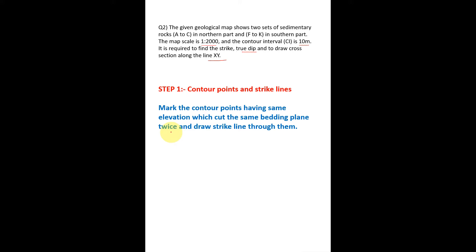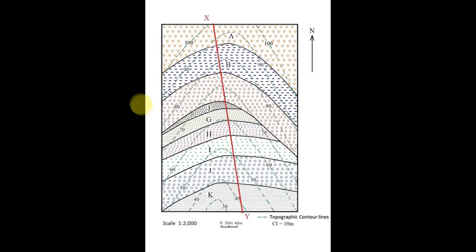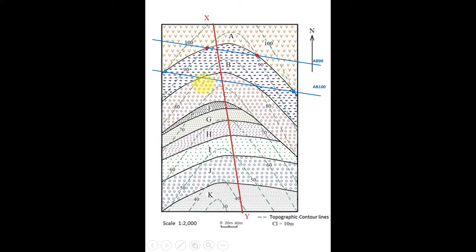Starting with bedding junction AB, the 90 contour line intersects it twice, so we draw a strike line directly through it and name it AB 90, since AB is the bedding junction and 90 is the contour height. For the same junction AB, the 100 contour line also intersects twice, so we draw a strike line named AB 100.